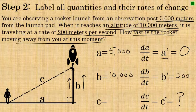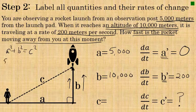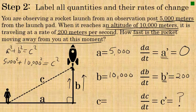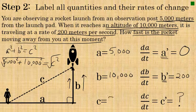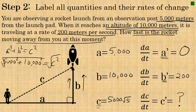The problem does not give us the exact length of side C, but because this is a right triangle we can use the Pythagorean theorem — a² + b² = c² — to figure out the length of side C. Side A is 5,000 and side B is 10,000. Adding the squares of those two sides gives us the square of side C, and taking the square root gives us 5,000 times the square root of 5 meters. So the length of side C is 5,000√5.